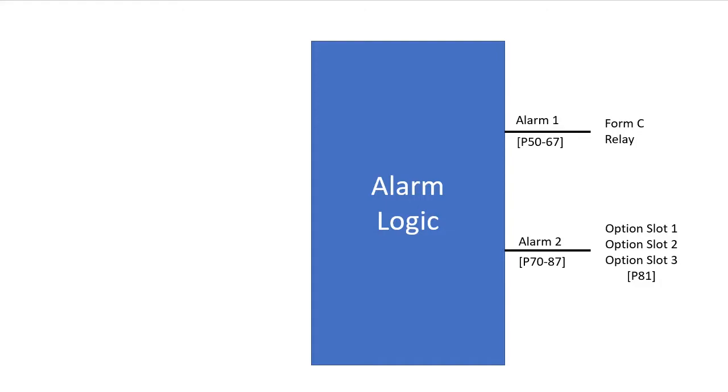So in this video we will focus on Alarm 1 knowing that we can do the exact same things using the Alarm 2 parameters. To create an alarm you can monitor the acceleration and deceleration status, if the actual speed is outside the limits you set, if the target speed is outside those limits, if the target speed is zero.